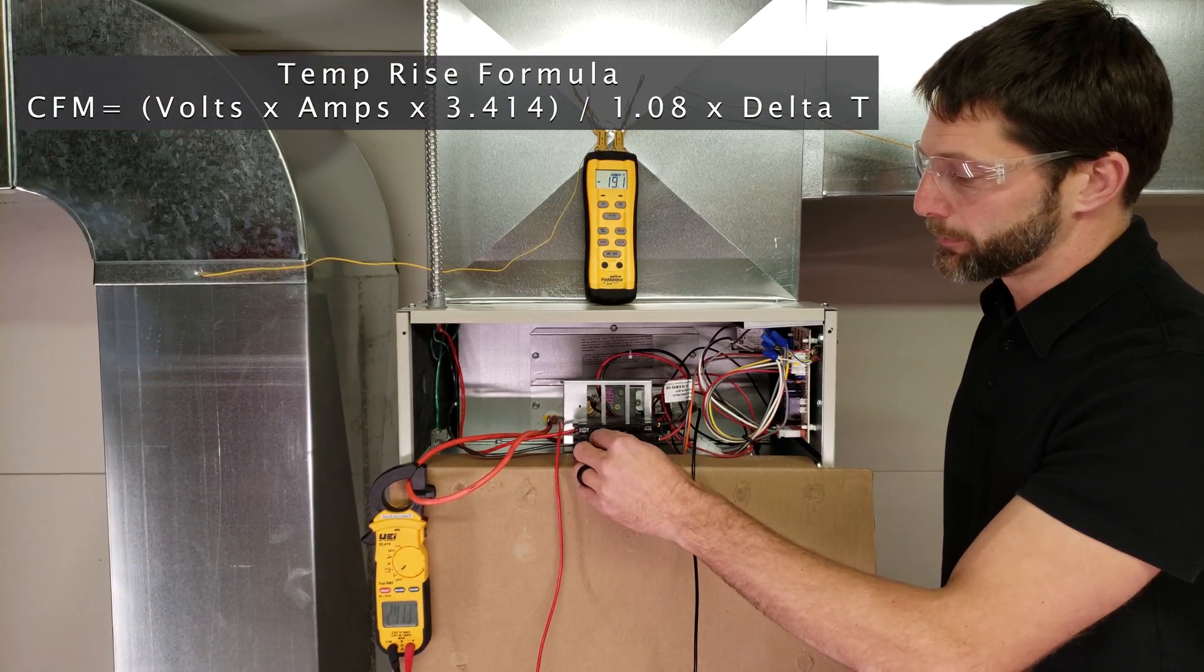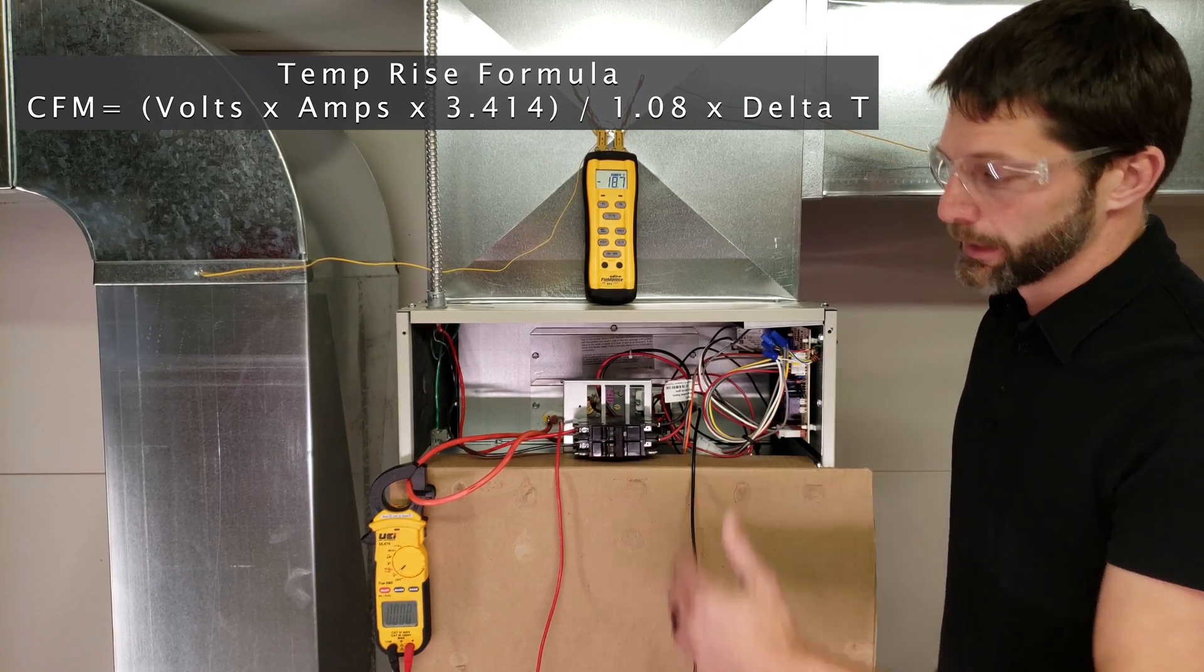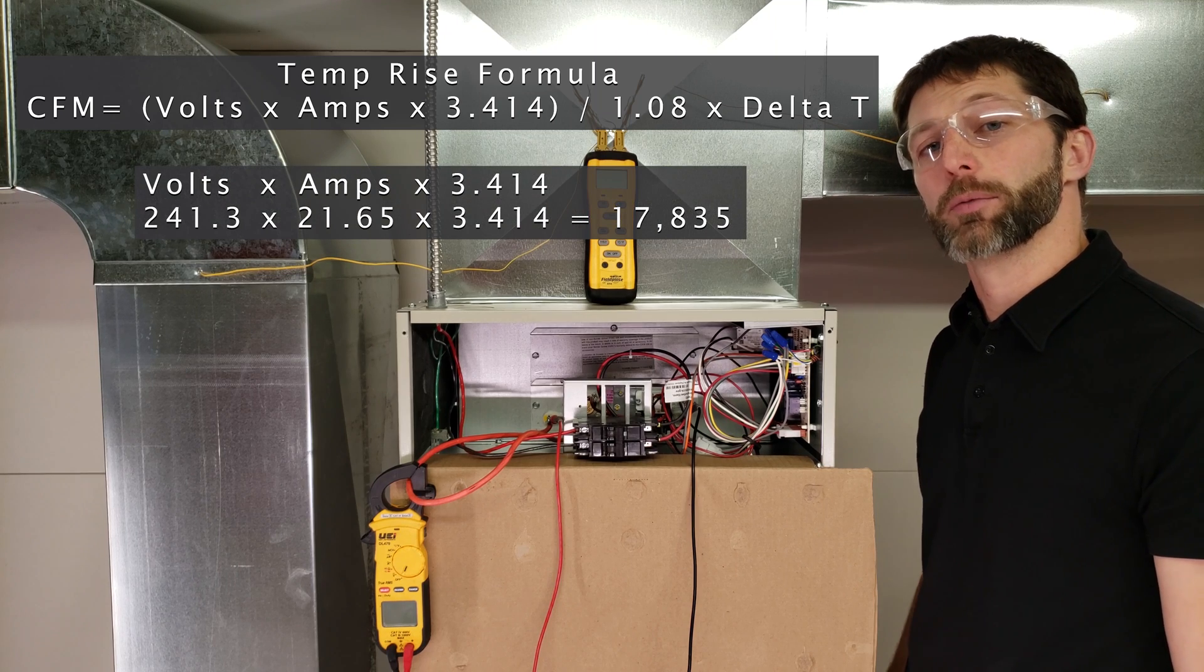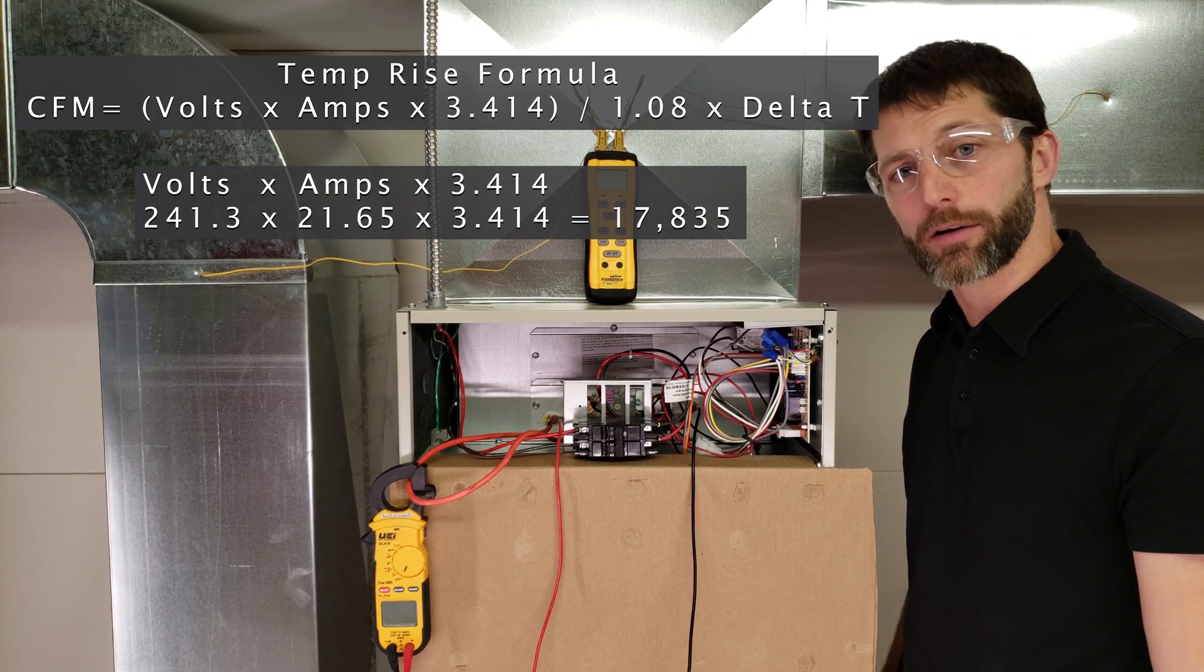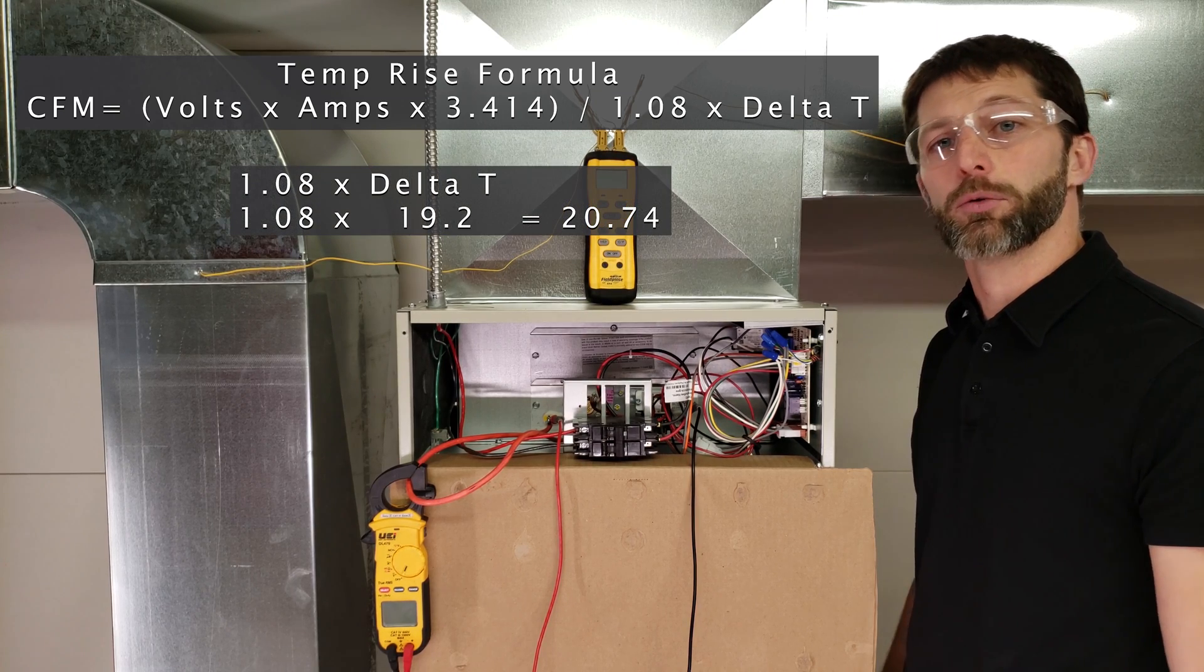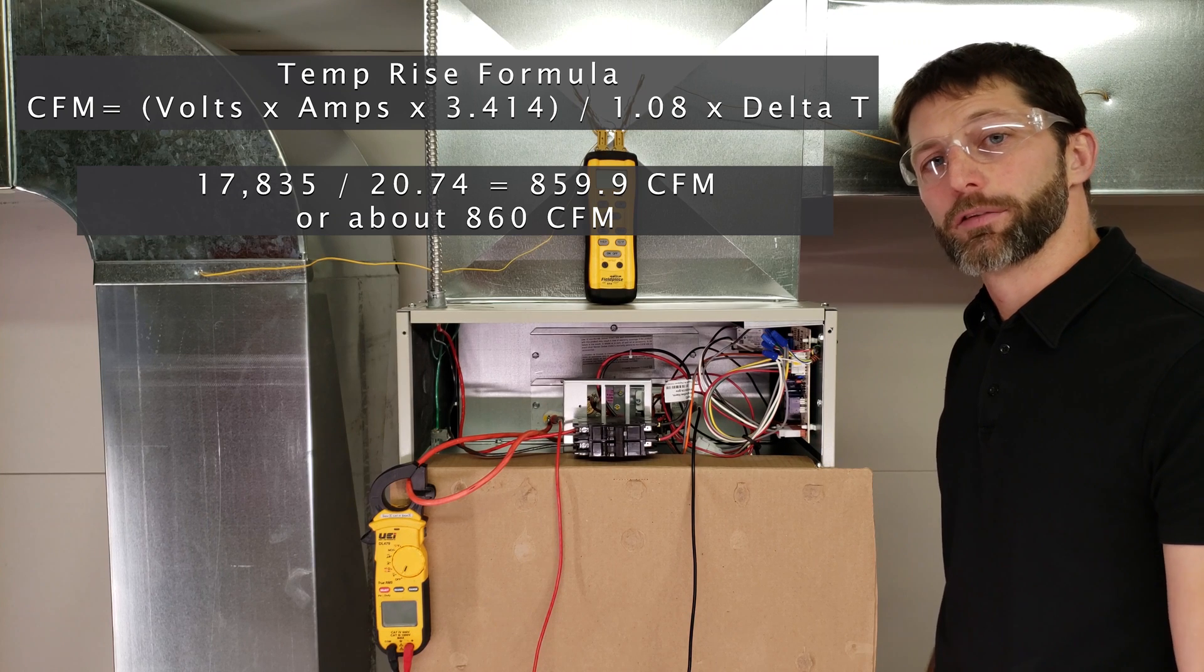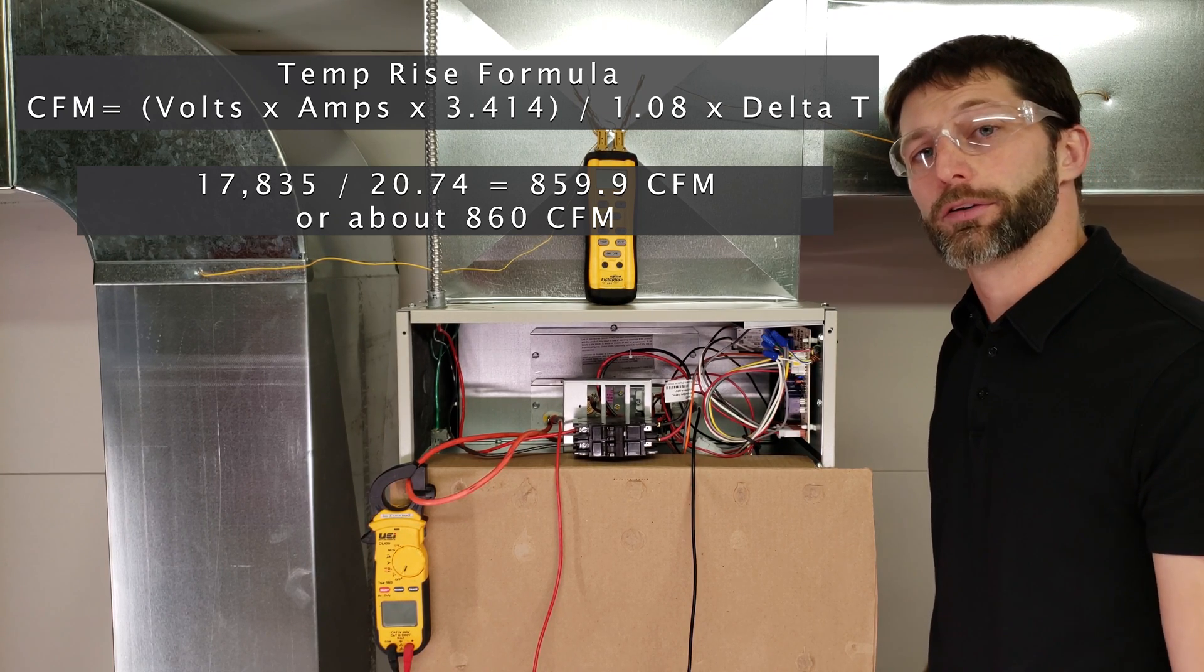I'm going to go ahead and turn this off now. You can turn it off at the thermostat, or since we're right here, I'm just going to turn it off at the breaker. So our volts times amps times 3.414 equals 17,835. Then we have 1.08 times the delta T, and that equals 20.74. So we have 17,835 divided by 20.74, and we're left at 860 CFMs.